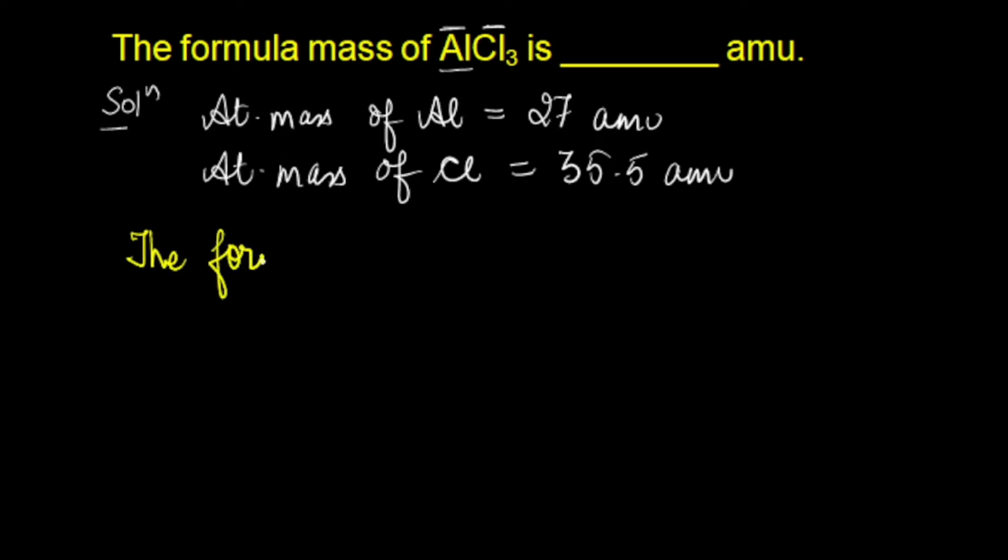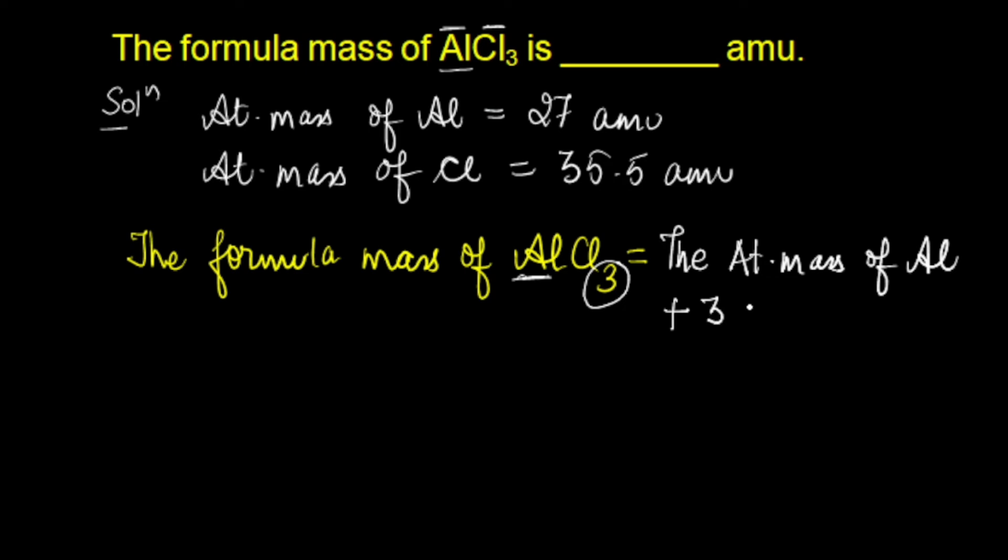the formula mass of AlCl3 is equal to the atomic mass of aluminium plus 3 times the atomic mass of chlorine.